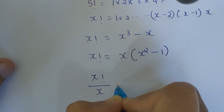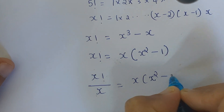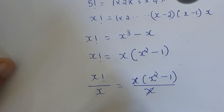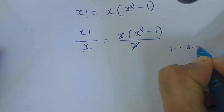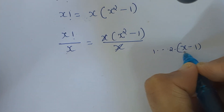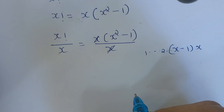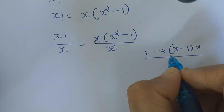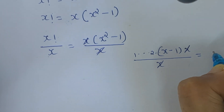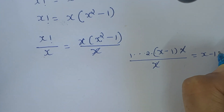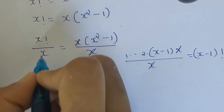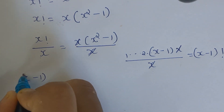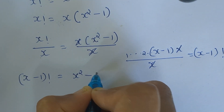That is, x factorial divided by x equals x × (x² - 1) divided by x. What is x factorial divided by x? x factorial is 1 × 2 × ... × (x-1) × x, divided by x. The x's cancel, which gives (x-1) factorial. So (x-1)! = x² - 1.